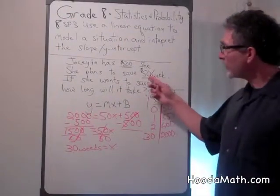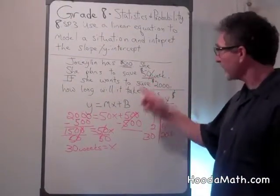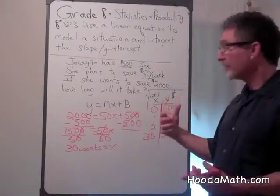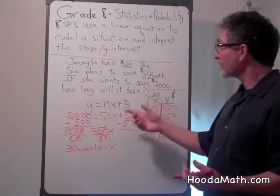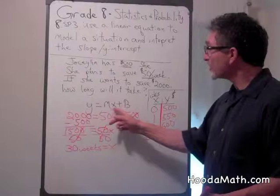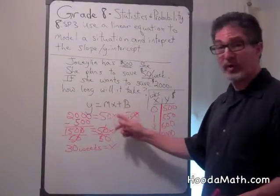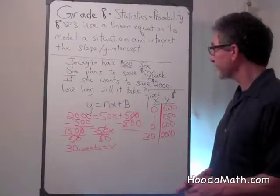When you have a rate that's constant, that is the slope. The y-intercept is what happens when you have 0 as your x. In this case, 0 weeks.